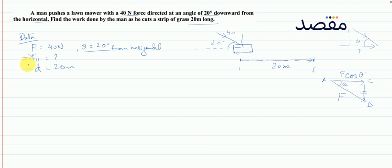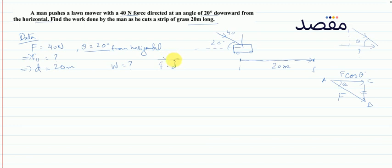F parallel component यानि adjacent component निकालना है। Displacement given है। Work done निकालना है। Work done = F · d, that means the dot product of force and displacement।